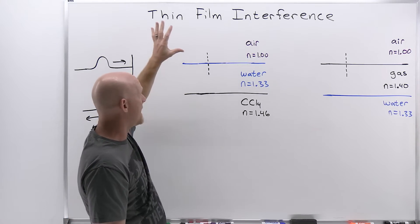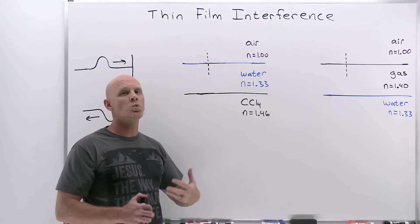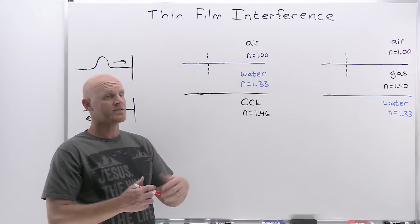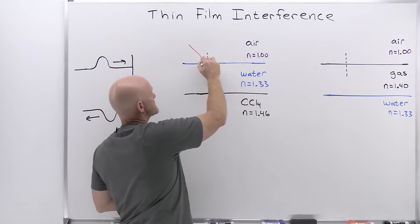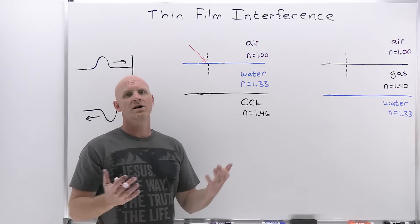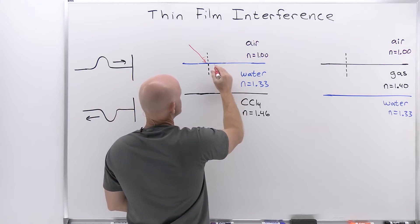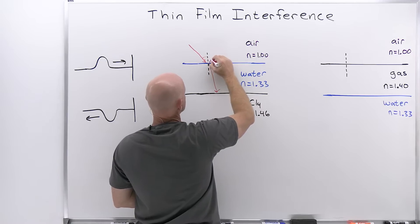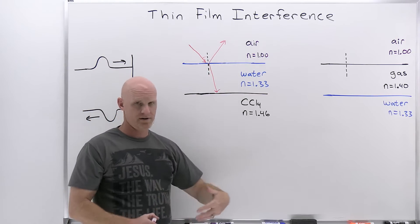White light — a combination of all the colors — is entering from the air into the water. I'll exaggerate these angles since the incident angle relative to the normal is actually very small, maybe 0.25 degrees — not discernible on a board like this. Going from a lower index of refraction to a higher index, the refracted ray bends towards the normal, but you also get a reflected ray where the angle of incidence equals the angle of reflection. So you get both reflection back into the air and refraction so that some light enters the water.